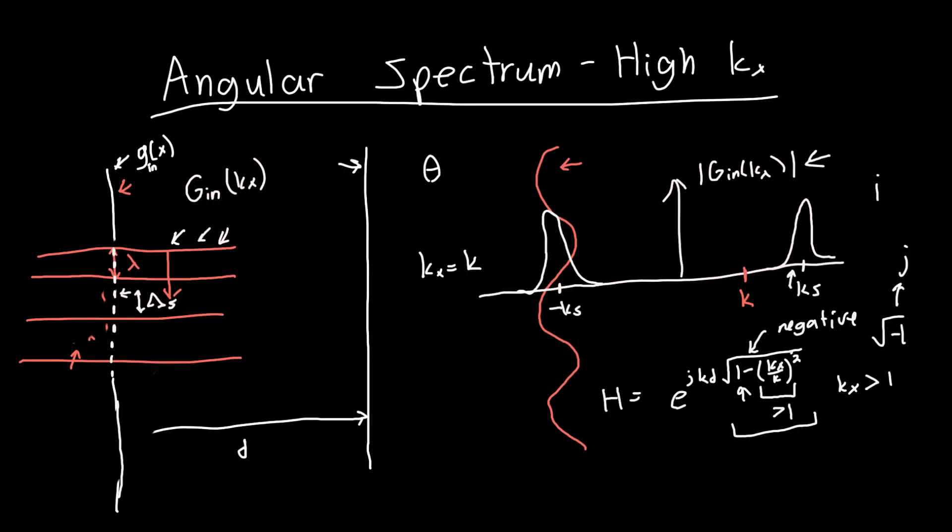So this value becomes an imaginary number. And so we've got e to the j, k, d. And I'm going to call this whole value, let's call it beta. Beta doesn't mean anything in the context of optics, not as far as I'm aware. So this negative square root becomes j beta.